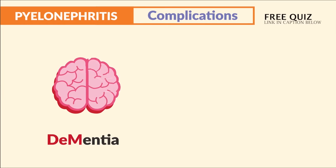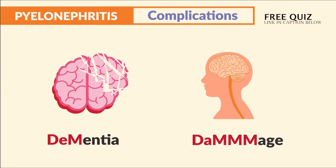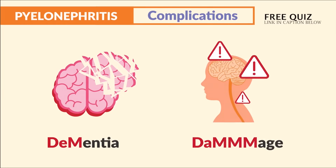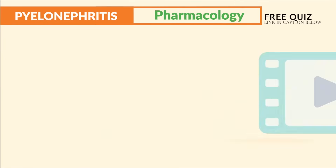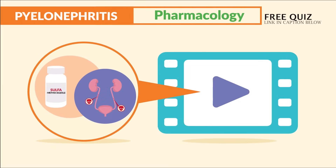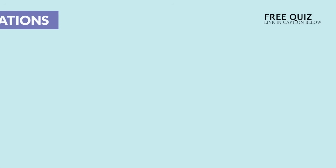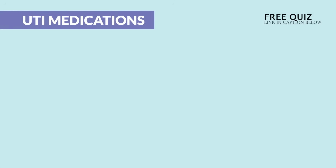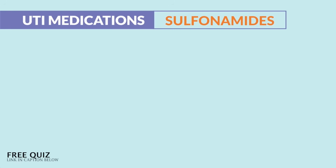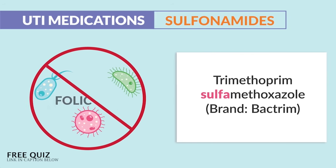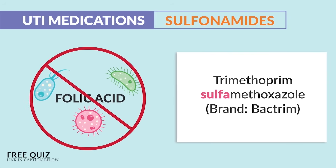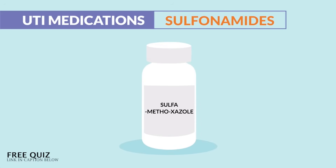Memory trick: the L's in delirium stand for limited, short-term confusion — fix the cause, fix the patient. The M's in dementia represent damage to the brain. In terms of pharmacology, we give antibiotics and analgesics for the pain. First on the list is sulfonamide antibiotics — trimethoprim-sulfa — brand name Bactrim. Its mechanism of action is stopping folic acid synthesis.